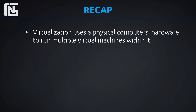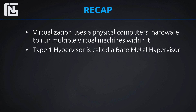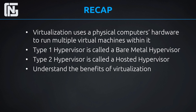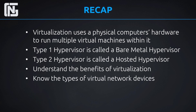That wraps up the lesson. Here's our quick recap. Make sure you understand that virtualization uses a physical computer's hardware to run multiple virtual machines within it. A type 1 hypervisor is called a bare metal hypervisor, while a type 2 hypervisor is a hosted hypervisor — type 1 is installed directly on the bare metal, and type 2 is installed on the host OS. Make sure you understand the benefits: easier to manage, cost savings, running all servers in a smaller footprint, less power, less hardware. Know the different types of virtual network devices: vSwitch, vNIC, vRouter, and virtual firewall. And make sure you understand VDI — virtualizing the end user desktops — which stands for Virtual Desktop Infrastructure.